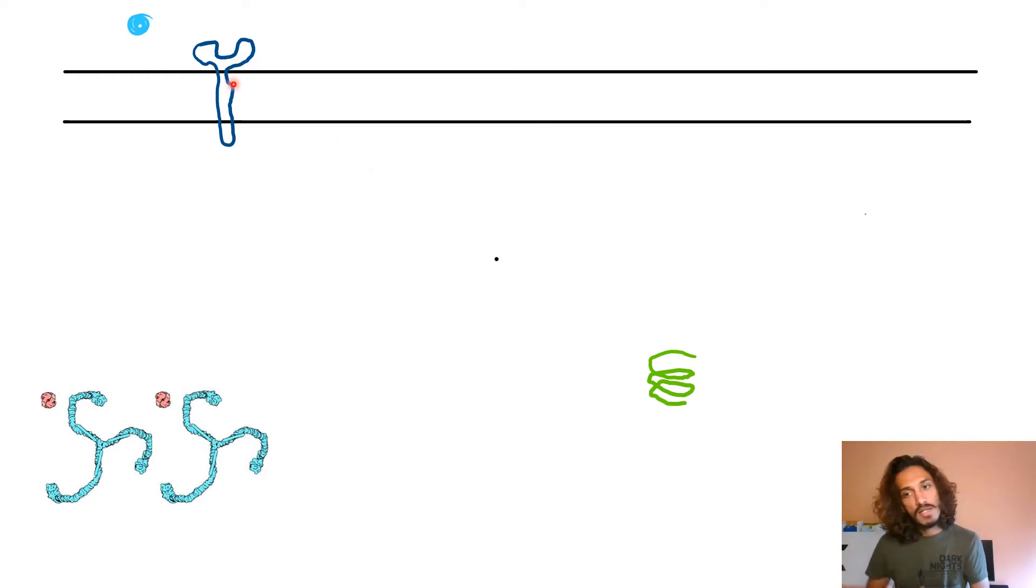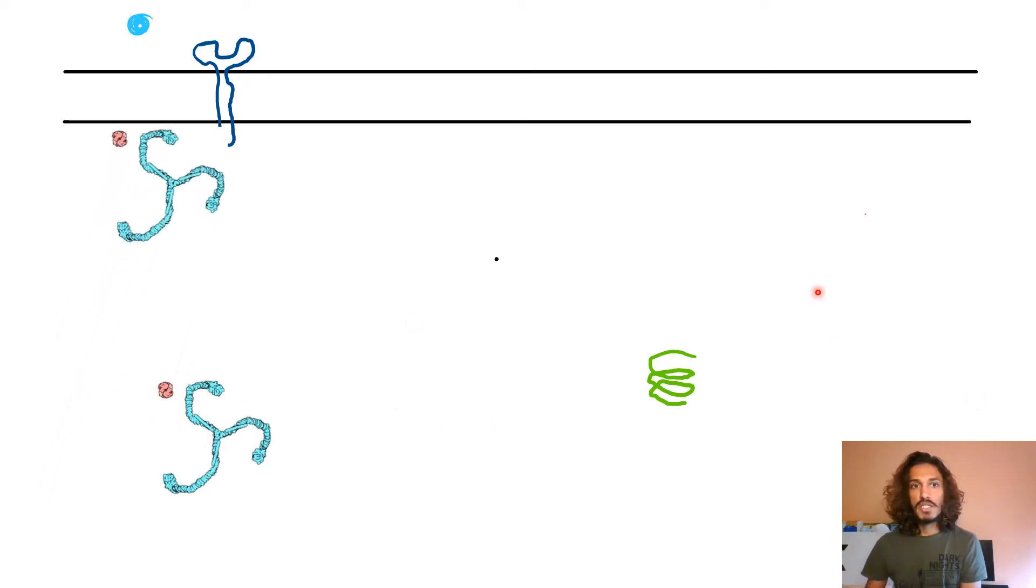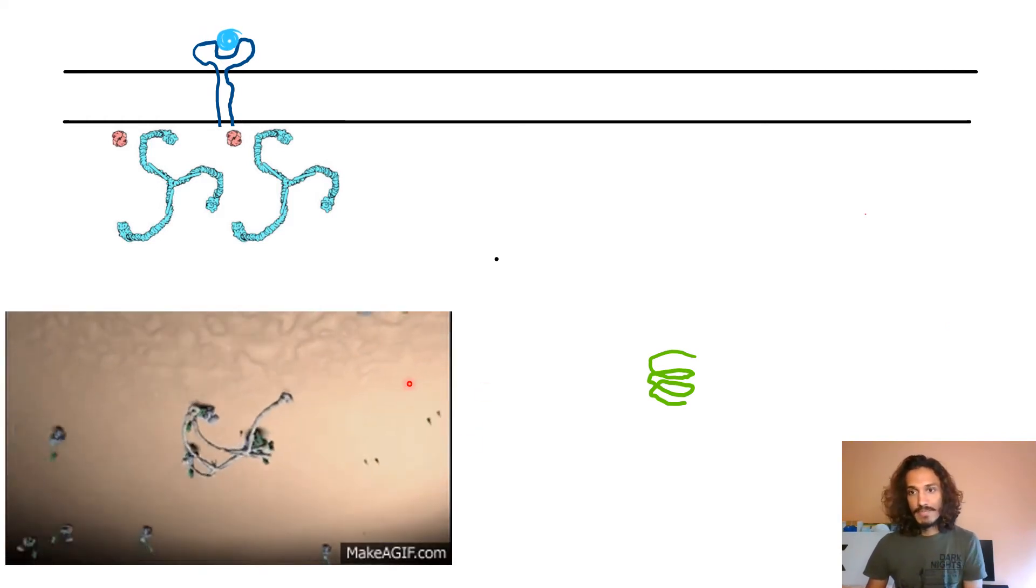This is a receptor where ligand attaches to it. Basically, your triskelion structure, through an adaptin, binds to that part of the receptor. Now there's a part of the membrane where your clathrin is coated along with the receptor. Once a ligand attaches to it, it will result in the whole budding process taking place.